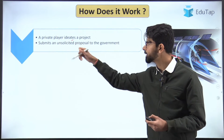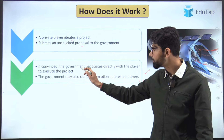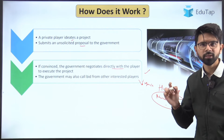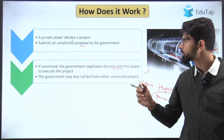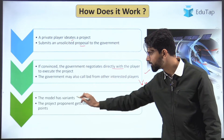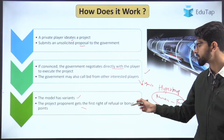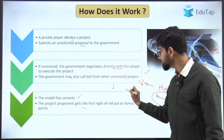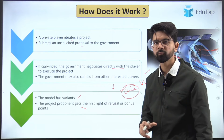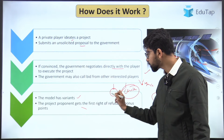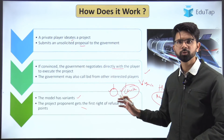So how does it work? First, a private player ideates a project and submits the unsolicited proposal to the government. If the government is convinced, it negotiates directly with the private player and also calls for bids — the first challengers for this model. After taking different considerations from the challengers, the project proponent — the first businessman — gets the first right. After noting points of view from challengers, the government gives the right back to the first proposer to either execute the project with the new idea or reject it.